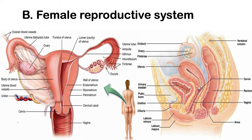Now we go to the female reproductive system. Let's start in the ovary. Your ovary is the one responsible for the production of your mature oocyte. Later on in oogenesis, or specifically in gametogenesis, we will look further into how a mature oocyte is produced. That is the main function of your ovary.